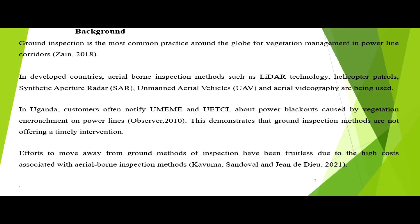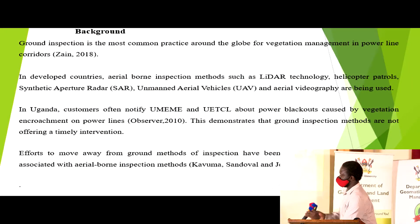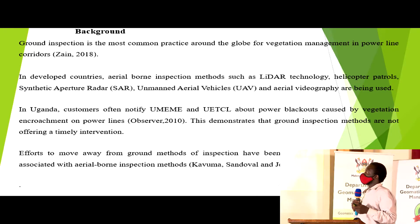As we know, the most common method of vegetation management for high voltage lines is ground inspection. In developed countries, other methods such as using SAR, unmanned aerial vehicles are being proposed. But in Uganda, customers often complain about power blackouts. Some of these power blackouts have been caused by vegetation encroachment, and efforts to move away from ground inspection have been fruitless because aerial inspection methods that developed countries are using are expensive.